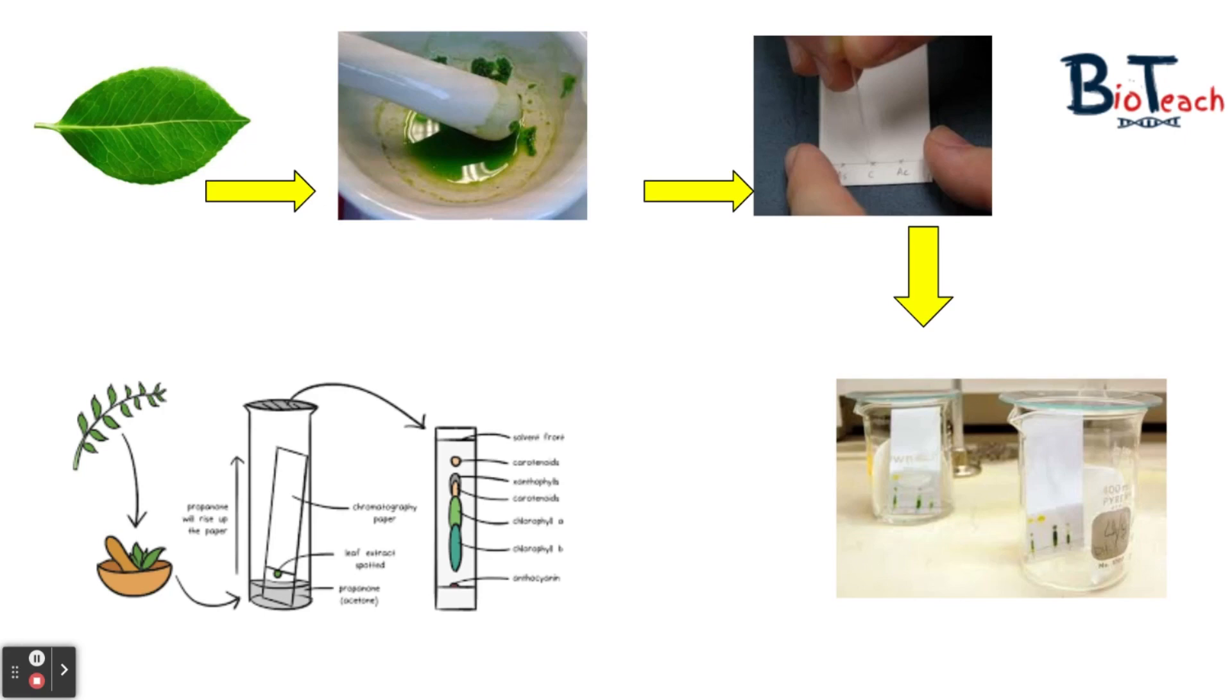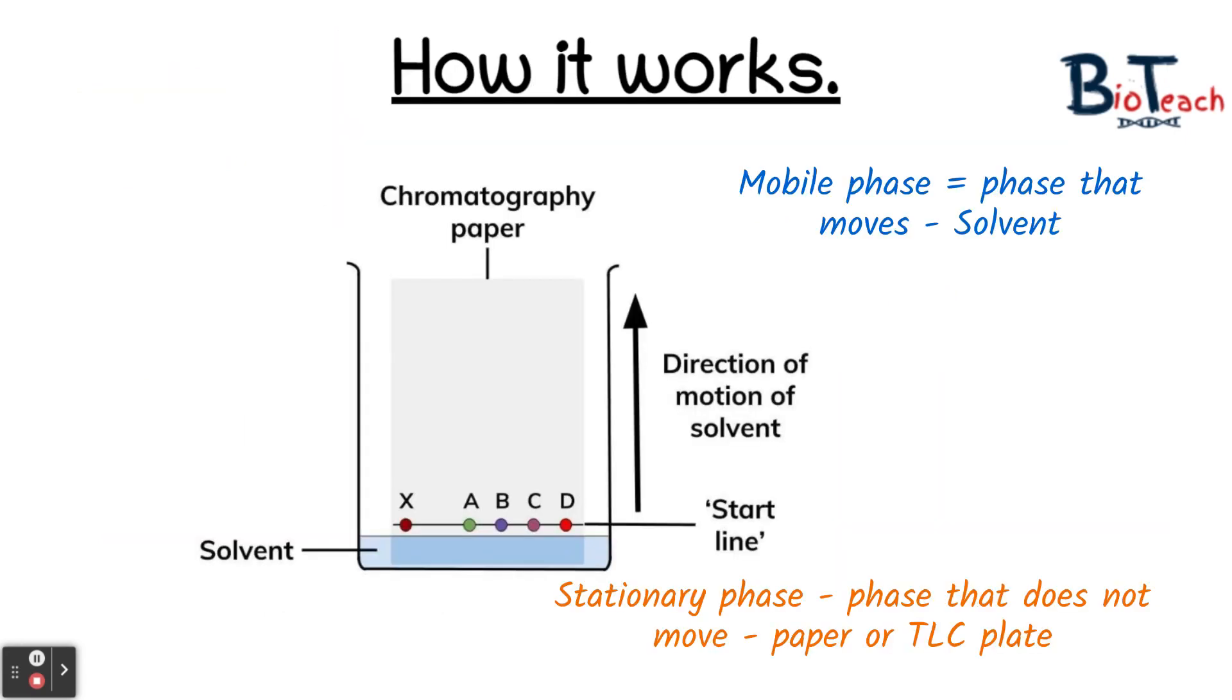In all chromatography there is a mobile phase and a stationary phase. The stationary phase is the phase that doesn't move, and in this case it will be the paper on which you spotted the pigment from the mushed up leaf. The mobile phase is the phase that does move, and in this case it will be the solvent that you're using.